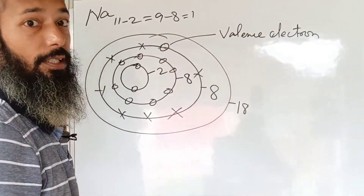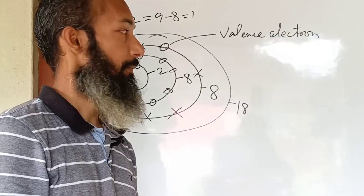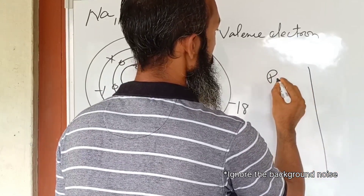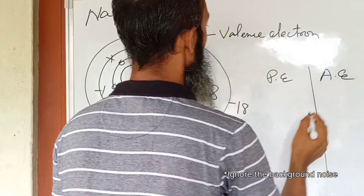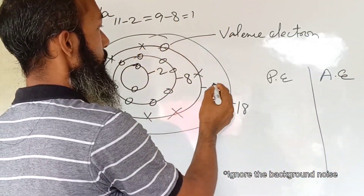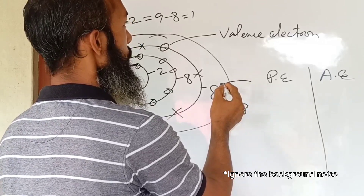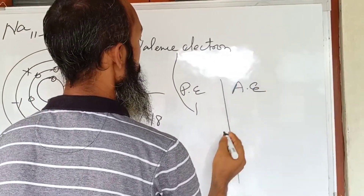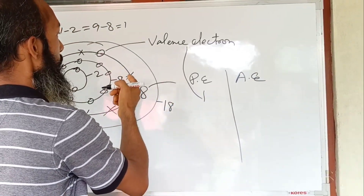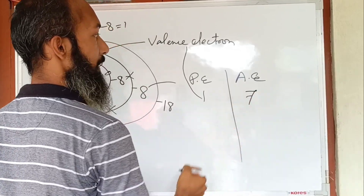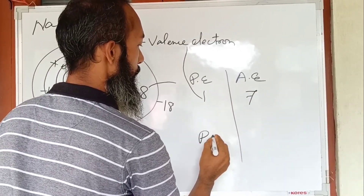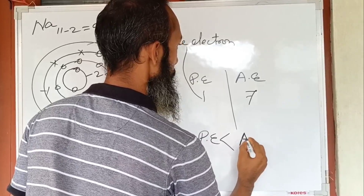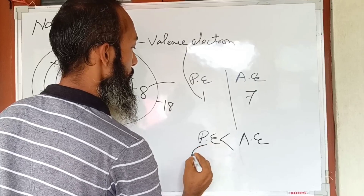Now, valency is a concept that is a little bit different and critical to understand. We have to find out both the present electrons and the absent electrons. In the third shell, it has the capacity to occupy eight electrons, but only one is present — that is the valence electron. For valency, we check how many places lie vacant: seven are vacant. Since one is less than seven, the number of present electrons — one — is considered the valency.